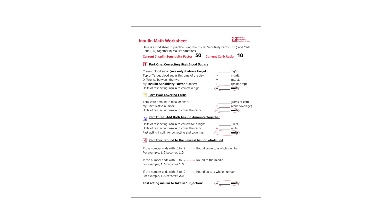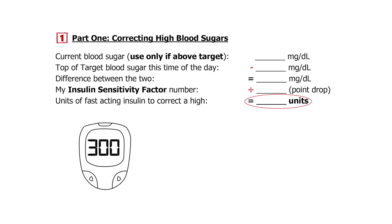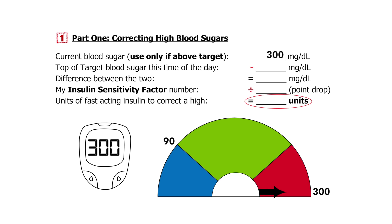Now on to Part 1: Correcting High Blood Sugars. You will test your child's blood sugar and write that number here. For this example, let's pretend the reading was 300. On the next line, write your child's top of target range number. For this example, let's say the target range is between 90 and 150, so the top of target range number is 150. Subtract the top of target range from the current blood sugar and write the answer here. Then divide this number by the insulin sensitivity factor — for our example, this is 50. So now we know that we need 3 units of fast-acting insulin to correct for high blood sugar. Three units of fast-acting insulin should bring the blood sugar down from 300 to the top of target range, which is 150.